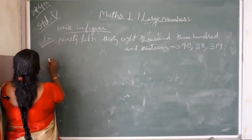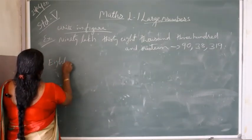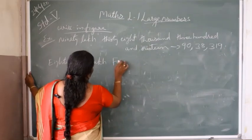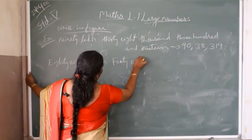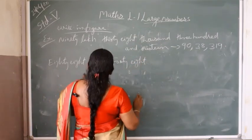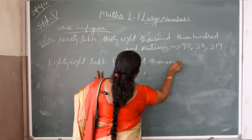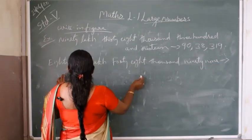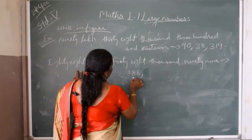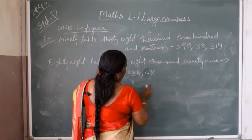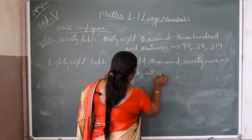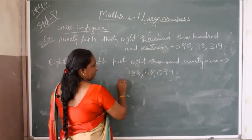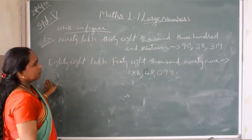Next question: 88,48,099. That is eighty-eight lakh forty-eight thousand and ninety-nine. There is no hundreds place value, so we add 0 and write 99. Ones, tens, hundreds, thousands, ten-thousands, lakhs, and ten-lakhs. Today's topic is over. Thank you.